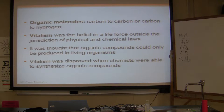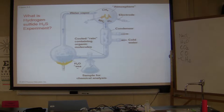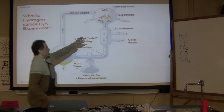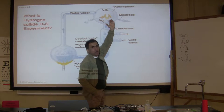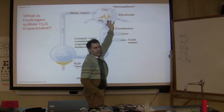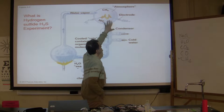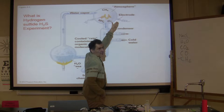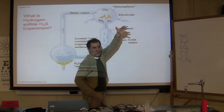Later on, Stanley Miller, a graduate student, put some of the gases that were in the atmosphere of the early Earth before life was formed — methane gas, ammonia gas, hydrogen gas — into a vacuum chamber. There was no atmosphere on the surface of the Earth at the beginning, they say.